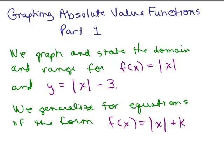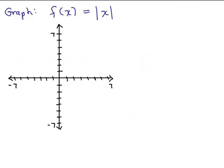We begin by graphing f(x) equals absolute value of x and y equals absolute value of x minus 3, and we generalize how to graph for equations of the form f(x) equals absolute value of x plus k. So let's graph this function f(x) equals absolute value of x. Now remember you could just write that as y equals absolute value of x. That's the same exact function. You could always replace f(x) with y and vice versa.